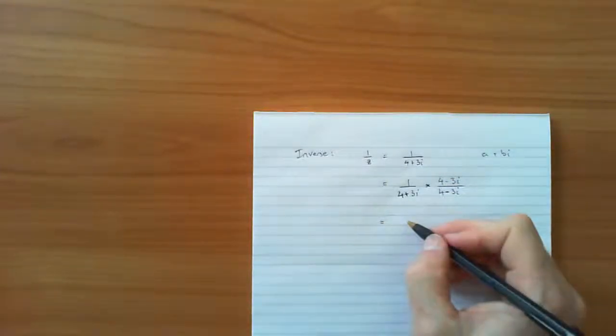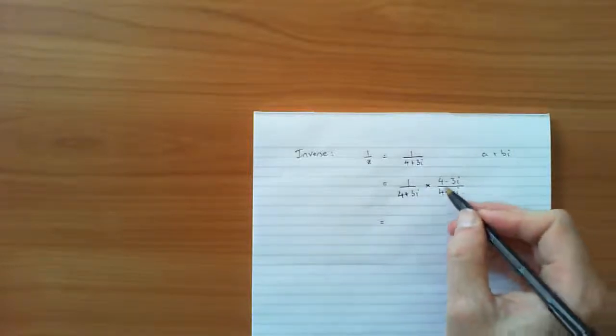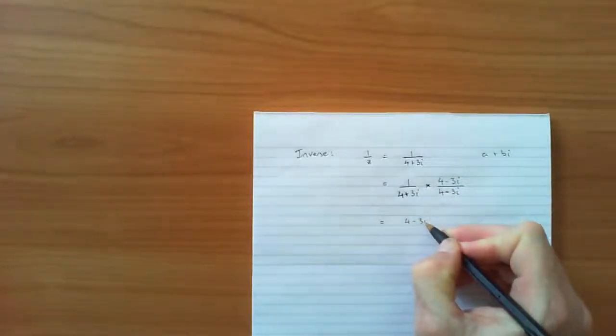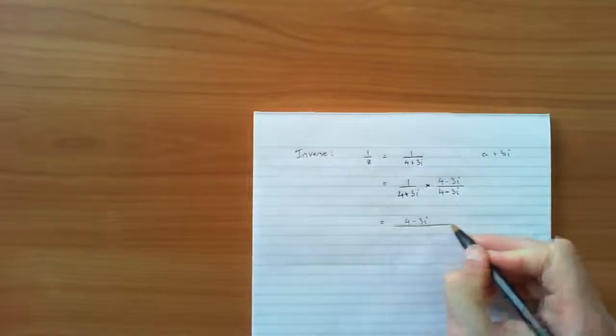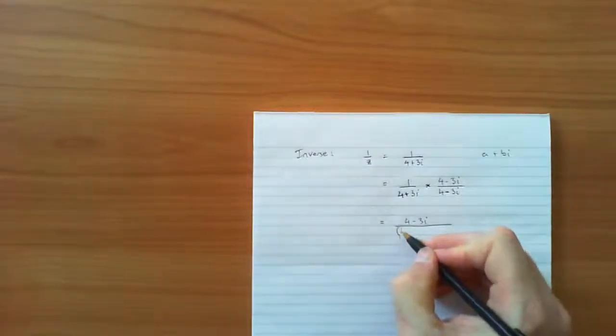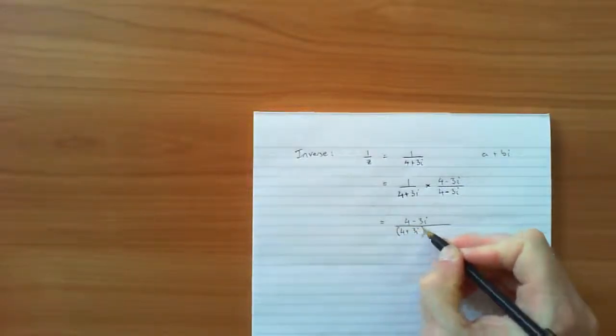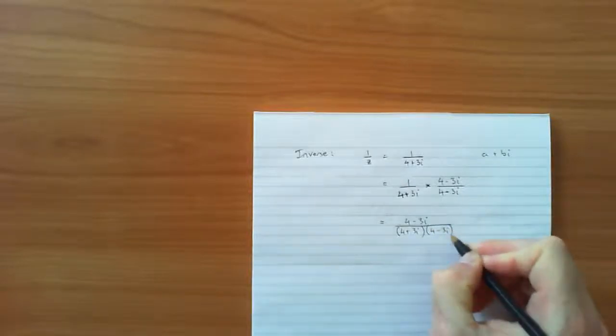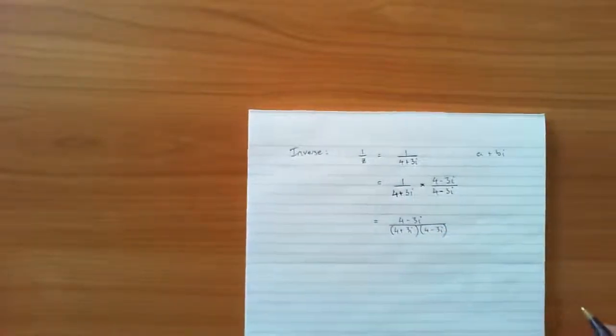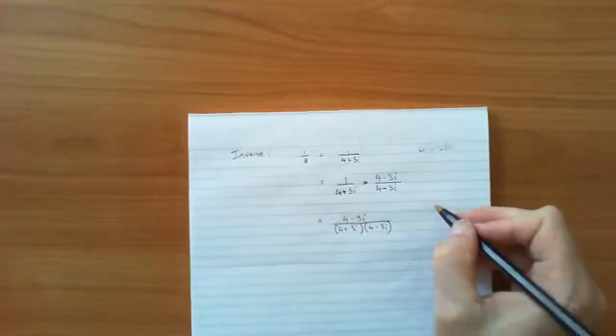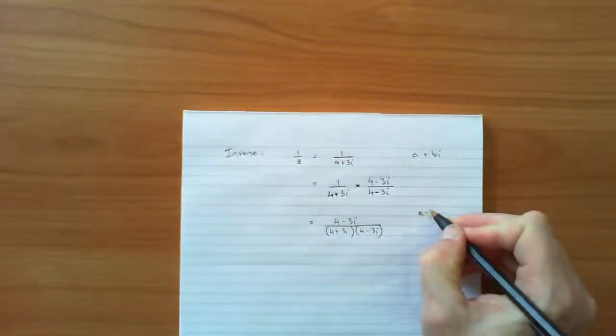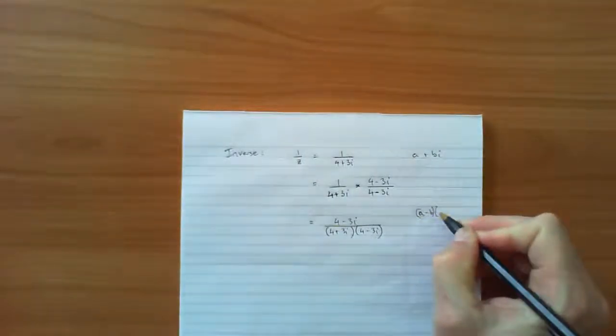So now on the top I've got 1 multiplied by 4 minus 3i, that's clearly going to be 4 minus 3i. Doesn't change. On the bottom I've got 4 plus 3i and 4 minus 3i. Now the rule that we're going to be using, and I'll just write it out the side here, you may recall from year 9 or 10, a minus b, a plus b.